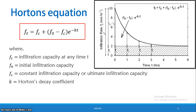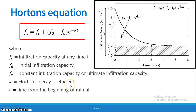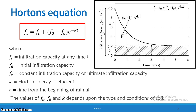In this equation, K is the coefficient — it is Horton's decay coefficient. If we consider T at any time, we will consider T. F0, Fc, and K are the characteristic values of the soil.